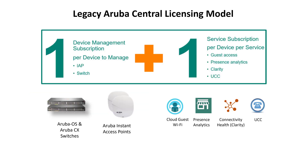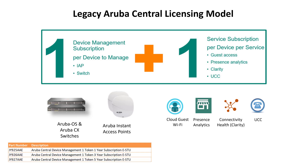This is how the legacy Central licensing model used to work. For every device — be it a switch or an AP — you had to purchase a single device management token. The same token could be used to manage any switch or AP model. You simply had to match the number of device management tokens to the number of switches and APs you were planning to deploy in Central.